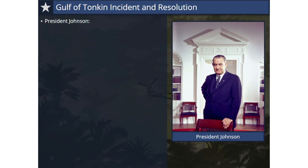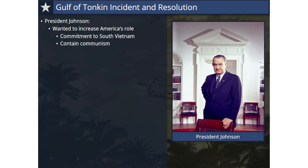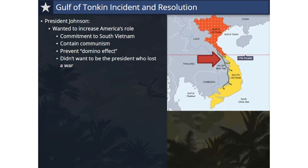After Lyndon Johnson took office, the direction of America's involvement in Vietnam had to be decided. Johnson came to believe America's role in Vietnam had to be increased. He wanted to maintain the U.S. commitment to its ally South Vietnam, to contain communism and protect Southeast Asia from the domino effect, and he also did not want to be the first U.S. president to lose a war.